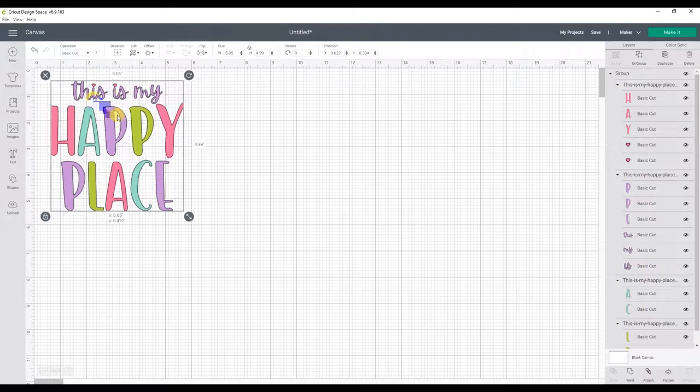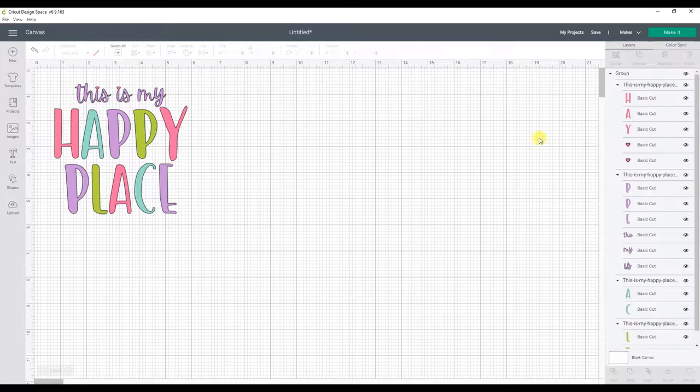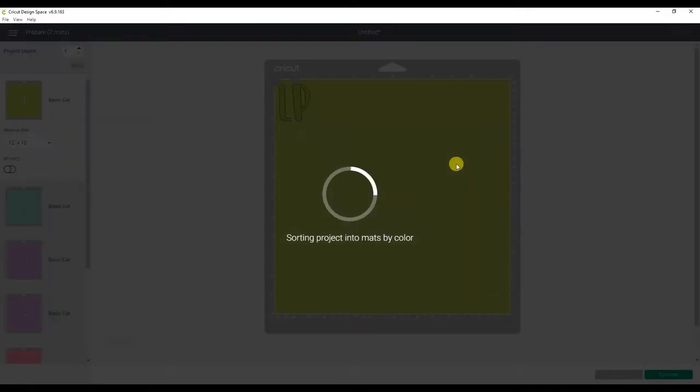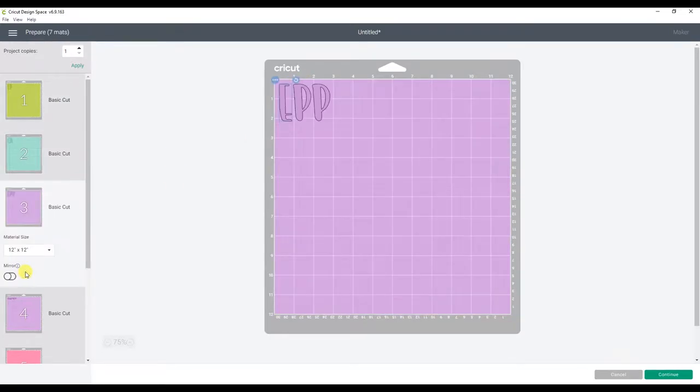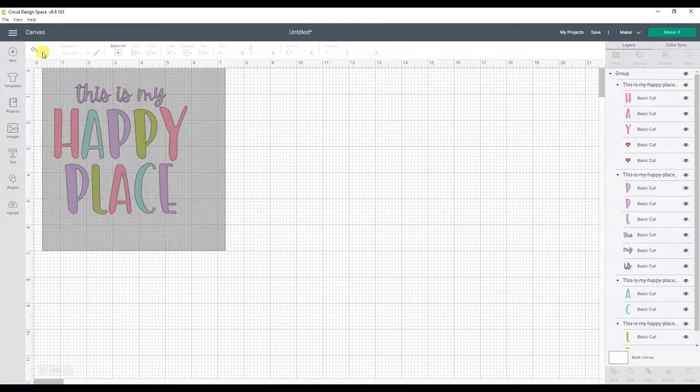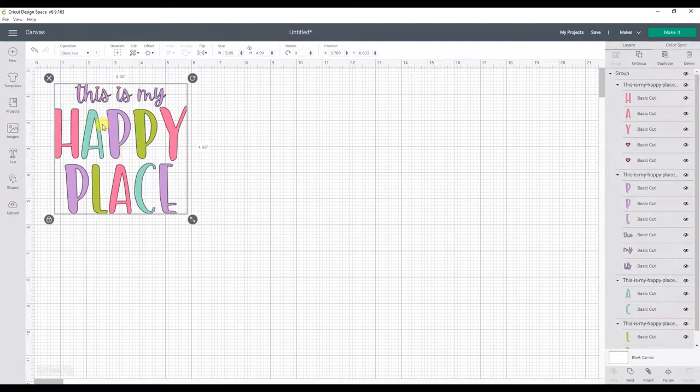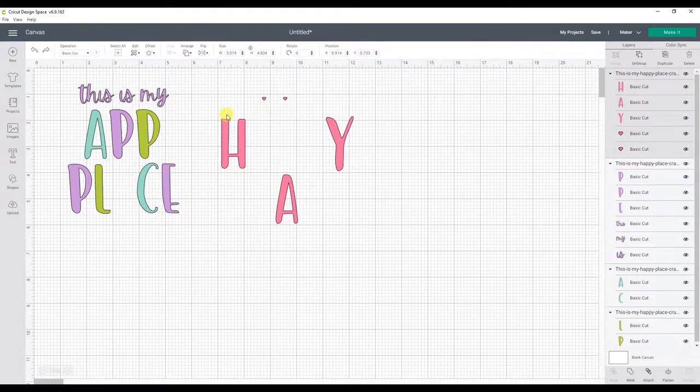Now that we have the design the size that we want it, we need to get the design layers organized a bit differently before we are ready to cut. If I just click make it now, you'll see that we have a lot of mats and there are some parts of the design that can be attached to make the most efficient use of our material. So the first thing I'm going to do is ungroup the design. You will see that when I ungroup the design, it is now broken up by color. The only part of my design that I want to keep together during the cut is the this is my part of the design.